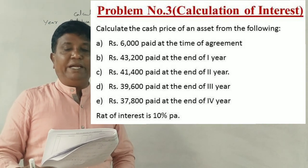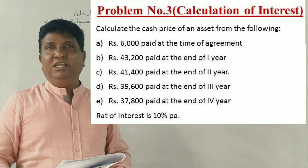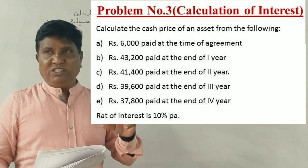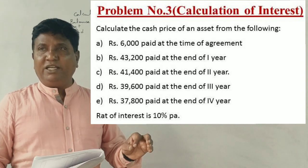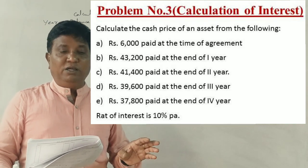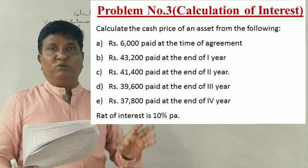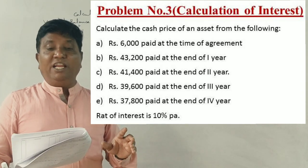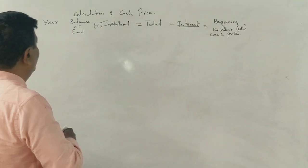6,000 rupees paid at the time of agreement. If you get an agreement, you have to pay the first 6,000 rupees as down payment. Then at the end of the first year you have to pay 43,000. At the end of the fourth year 37,800, and 10% interest charge for the first 4 years.